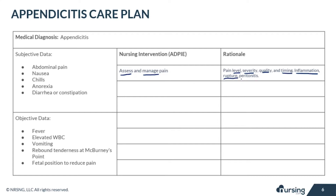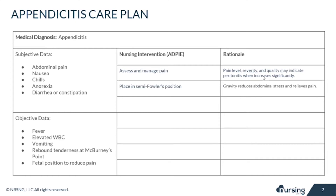After time, when that infection spreads into the peritoneum, the patient will start to have more pain, which may indicate peritonitis. Treat accordingly with pain medications ordered by the doctor. You may also want to place the patient in a semi-Fowler's position, because gravity helps to reduce abdominal stress and relieves pain.